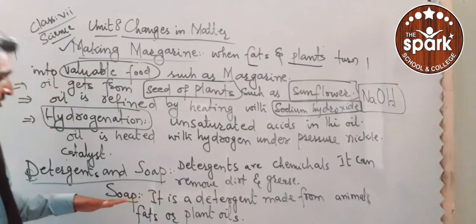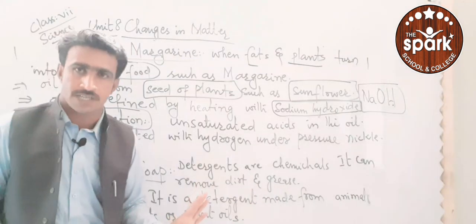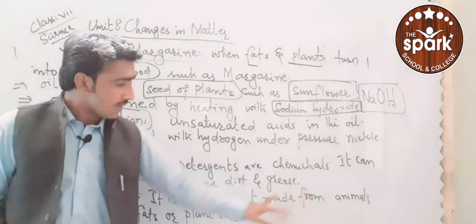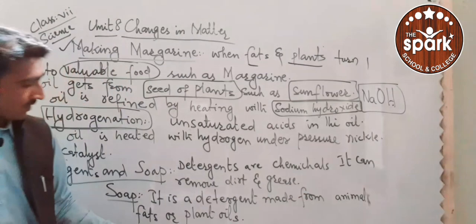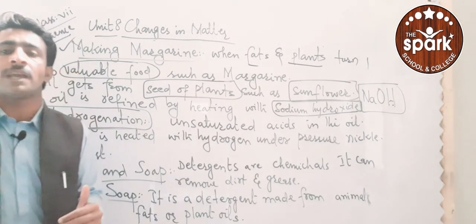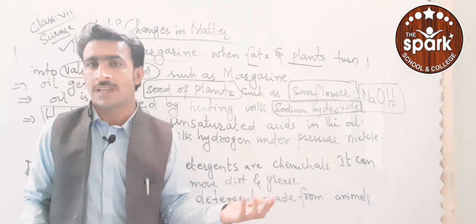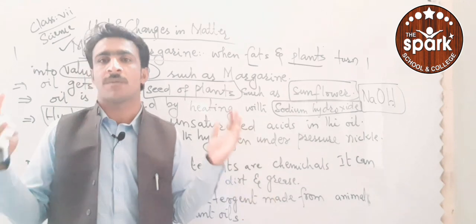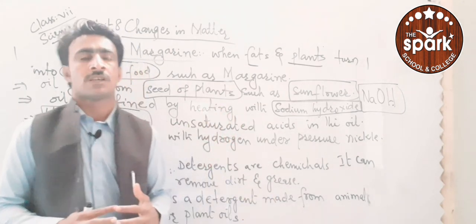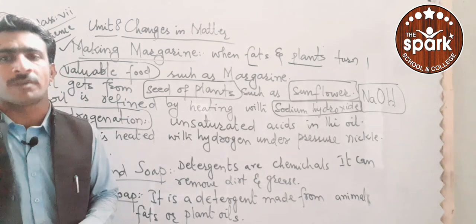Next is soap. What is soap? Soap is a detergent, but it is made from animal fats or plant oils. We obtain soap from animal fats or plant oils — through those we make soap.